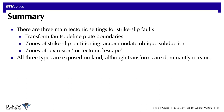To summarize, that's an overview of the three main tectonic settings for strike-slip faults: transform faults, which are the only ones that define plate boundaries; zones of strike-slip partitioning, which accommodate oblique subduction; and zones of extrusion or tectonic escape. All three types are exposed on land, although the vast majority of transforms are found in the oceans. Thanks for your attention.